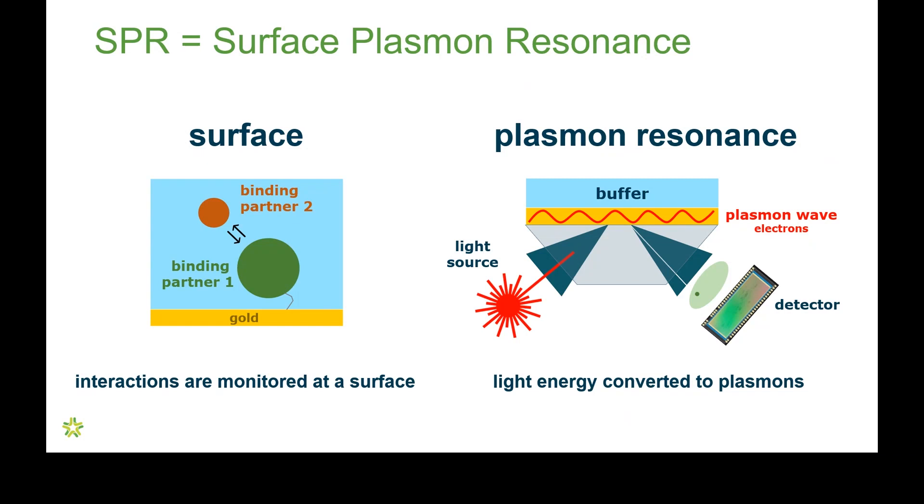Plasmon resonance is how we monitor these binding events. It's the optical detection method for measuring these two binding partners.